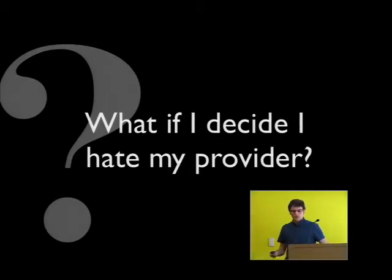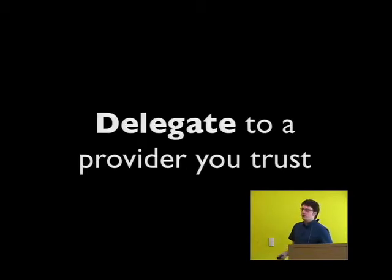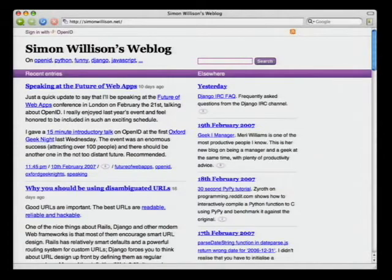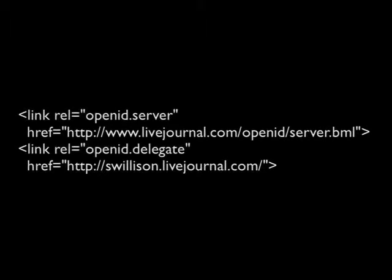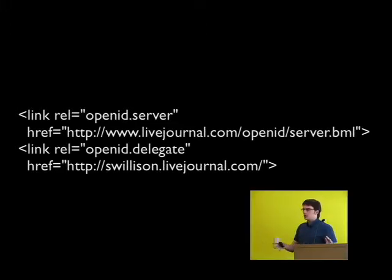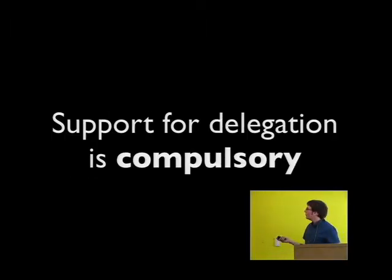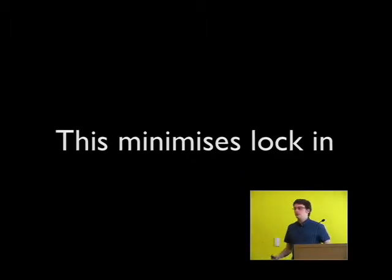What do you do if you decide you hate your provider? You can use your own domain name and delegate to a provider you trust. On simonwillison.net, the source has OpenID.server and OpenID.delegate tags. If I log into something with simonwillison.net, that site checks the tags and sees my actual OpenID is swillison.livejournal.com. If I decide I don't want to use LiveJournal anymore, I switch providers, change those two lines of HTML, and keep using my OpenID. Support for delegation is compulsory in the OpenID spec, which minimizes lock-in and keeps things truly decentralized.